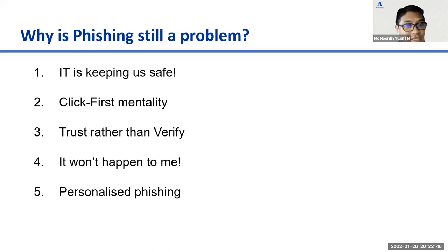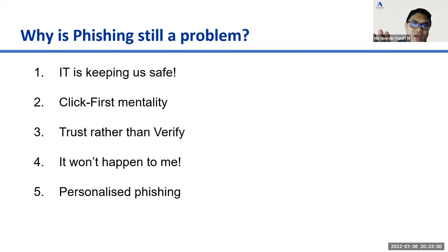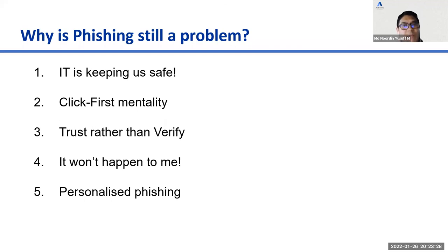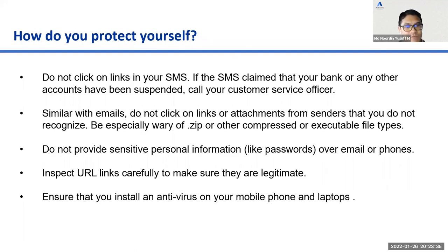Why is phishing still a problem? Because many people have the mindset that 'IT or InfoSec is keeping us safe' — but security is everyone's responsibility. There's also a 'click first' mentality, wanting to clear emails quickly. People tend to trust rather than verify. Some think 'it won't happen to me,' but many people are losing money through phishing right now. Hackers are now creating personalized, targeted phishing campaigns designed solely for you.